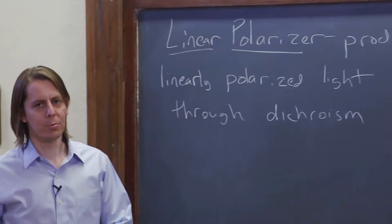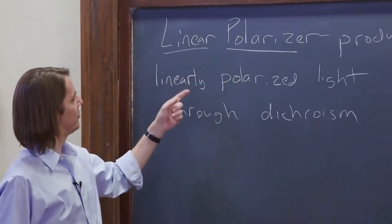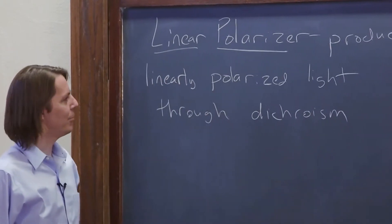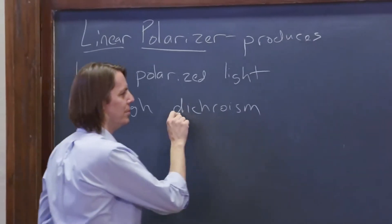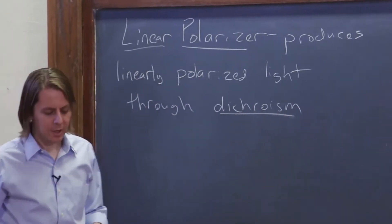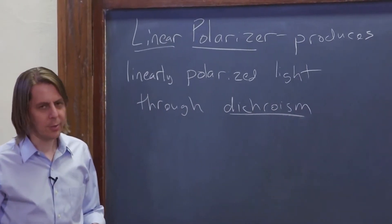So there's a horrible definition because it basically just said what it is, linearly polarized light, and it used another word that you may not know, dichroism.